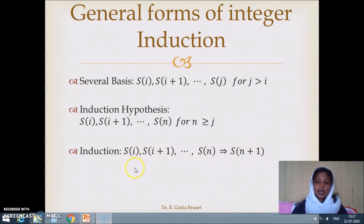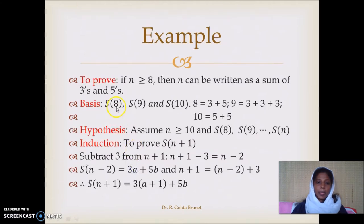Let us see an example. To prove: if n is greater than or equal to 8, then n can be written as a sum of 3s and 5s. The basis statements: the minimum value that n can assume is 8.